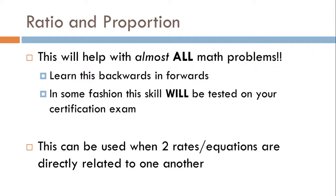Putting ratio and proportion together will help solve almost all pharmacy math problems. You want to learn this backwards and forwards — it will appear on your certification exam, whether directly or as a step in a multi-step question. This method works when two rates are directly related. For instance, if you have milligrams per mil on one side, milligrams must be on top and mils on the bottom on the other side too. Units must stay the same on both sides of the equals sign.